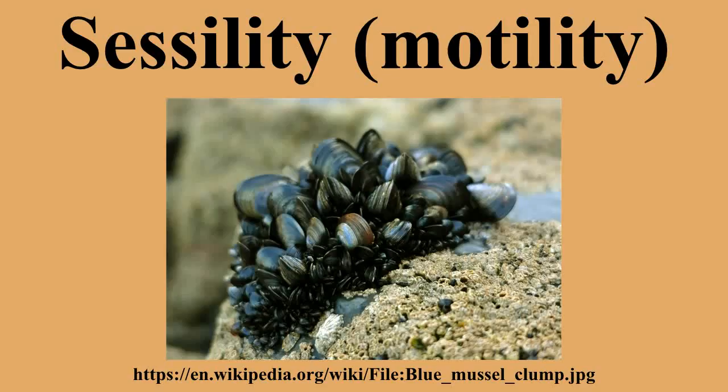Sessile animals typically have a motile phase in their development. Sponges have a motile larval stage which becomes sessile at maturity. In contrast, many jellyfish develop sessile polyps early in the life cycle.